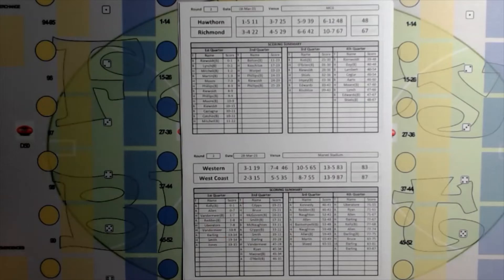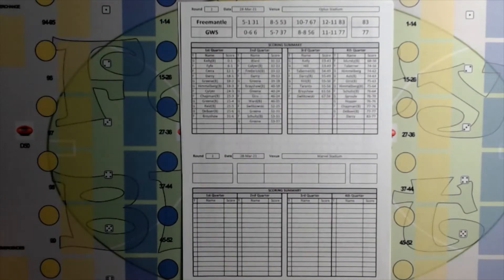The Western Bulldogs 13.5.83, West Coast Eagles 13.9.87. And finally to conclude the games in round two, Fremantle 12.11.83, GWS 11.11.77.